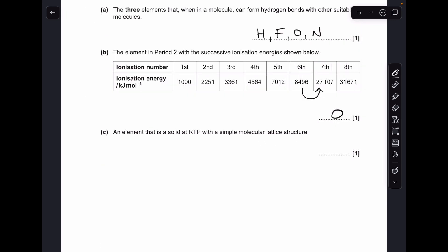Part C, an element that's a solid at RTP with a simple molecular lattice structure. Well, you've got two choices: you can either go for phosphorus or sulfur. Just a reminder for revision, phosphorus forms the P4 molecule and sulfur forms the S8 molecule.